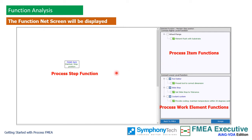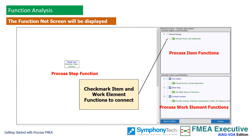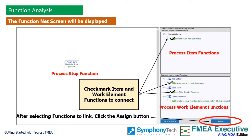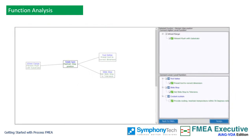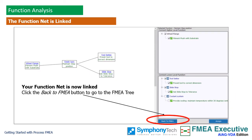Your focus function will appear at the center of the screen. Higher level process item functions and lower level work element functions will be displayed on the right frame of the screen. Select the functions from higher and lower levels that are connected with your current focus function and click the assign button. Your function net is now linked. Click the back to FMEA button to go back to the FMEA tree.